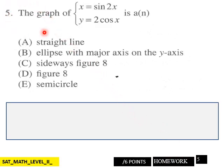Page 5, the graph of x equals sine 2x and y equals 2 cosine x is a blank. Which one of these here represents this graph? You got 6 points here, page 5.